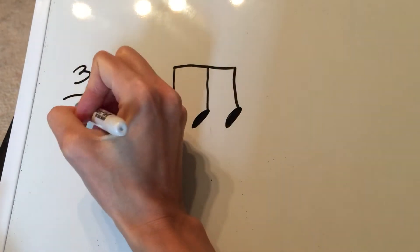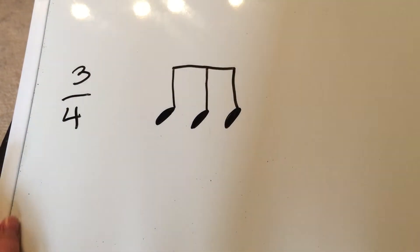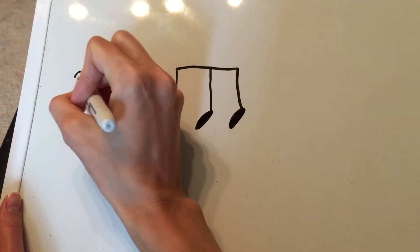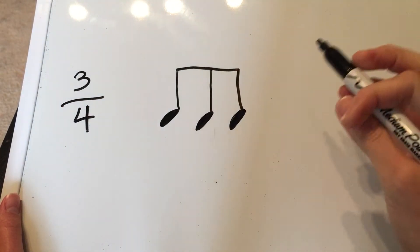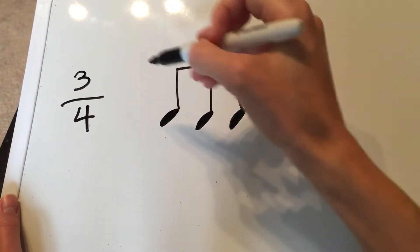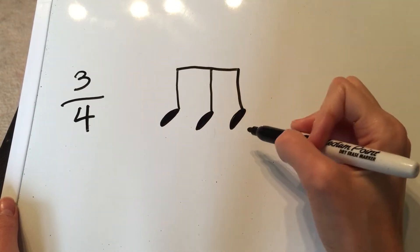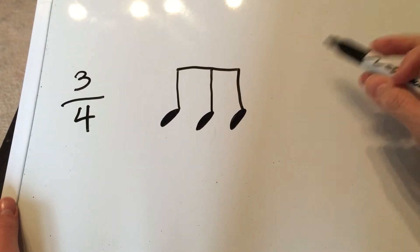So if we had three, four—that works. Okay, three, four. This triplet would count for one beat of the three beats.